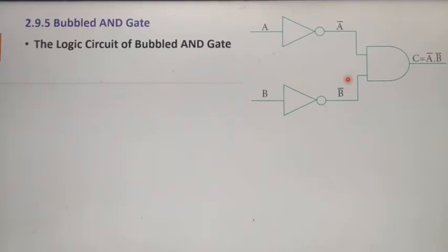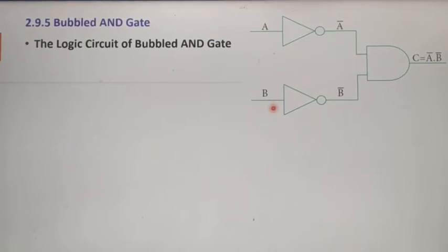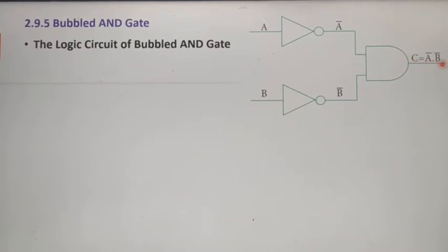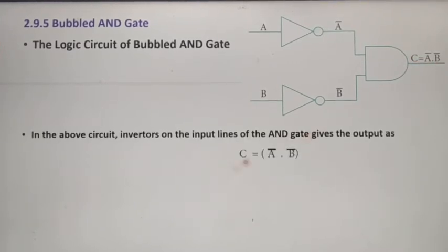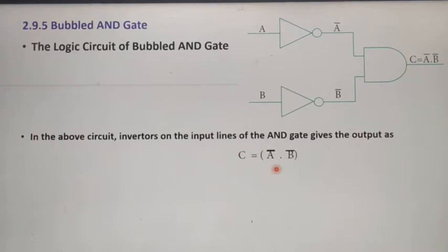First we can see about Bubbled AND Gate. This is our logic circuit for Bubbled AND Gate. Here we have a single AND gate and two inverters. The two inverters' outputs are given as inputs for this AND gate. Here the first input is A, A is inverted into A bar. The second input is B, B is also inverted into B bar. Then these two outputs are given as inputs for this AND gate. So our output C is equal to NOT of A AND NOT of B.